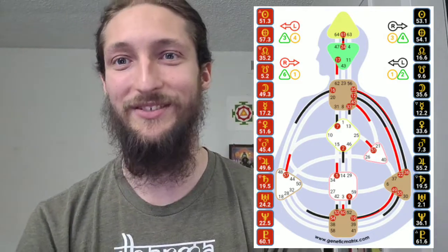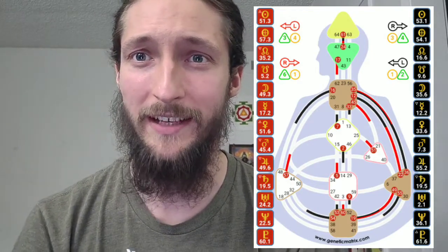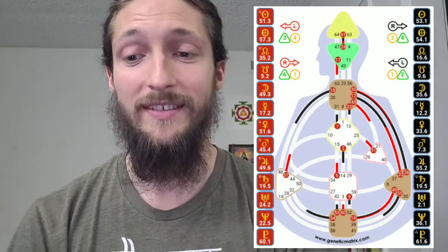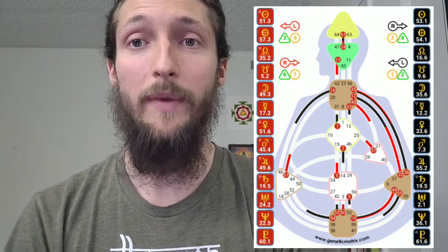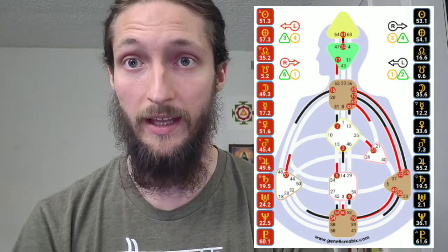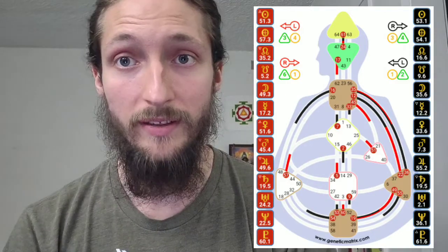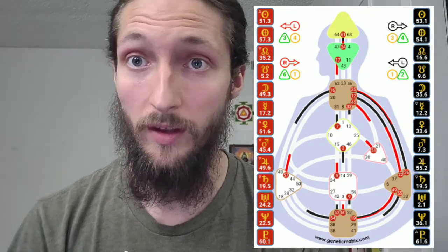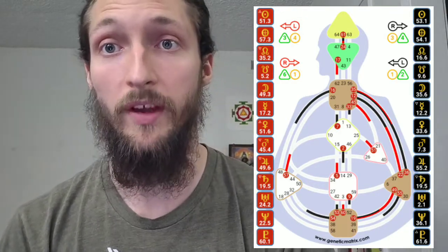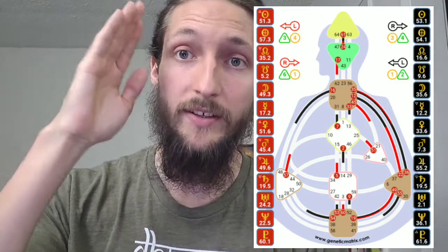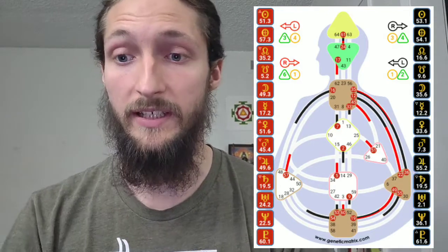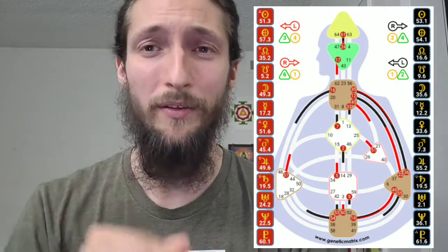Taking one more step into this chart — we have the undefined heart as well. I always like to go over the undefined centers because that gives us the framework the mind is working with. With the undefined self, this person may look for love outside themselves. With the undefined sacral, they don't always know when enough is enough. With the undefined spleen, they might hold on to things that aren't good for them. With the undefined heart, they may try to prove their worth to others. Thankfully, this person has a defined sense of individual inspiration from their crown to their mind, and a logical system — gate 17 — so they can think for themselves, though they can't always communicate that logic to others.